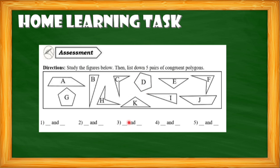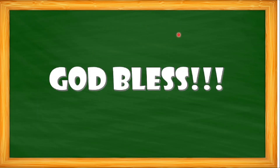For your home learning task, Grade 5 pupils, I hope you already know how to identify if two figures are congruent polygons. Study the figure below, then list down five pairs of congruent polygons — for example, write 'A and B are congruent.' That's all for today. Thank you and God bless.